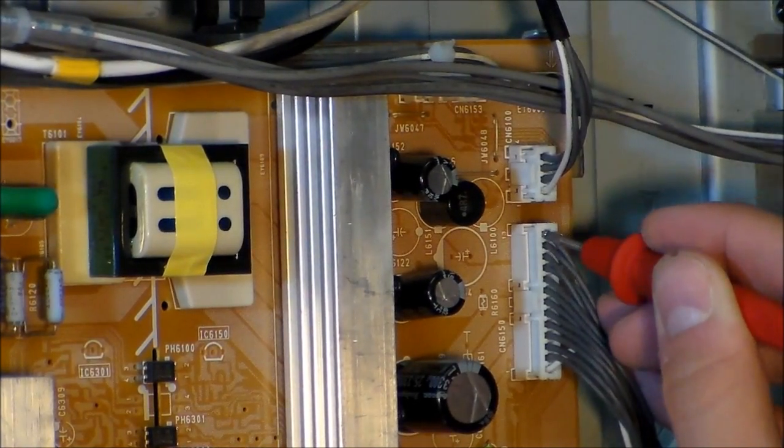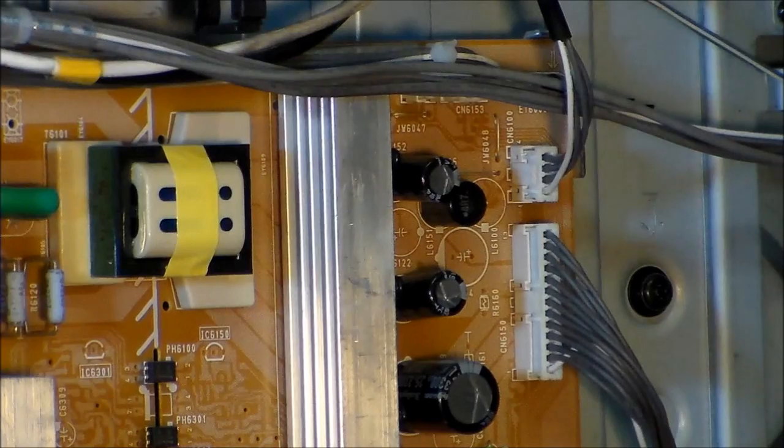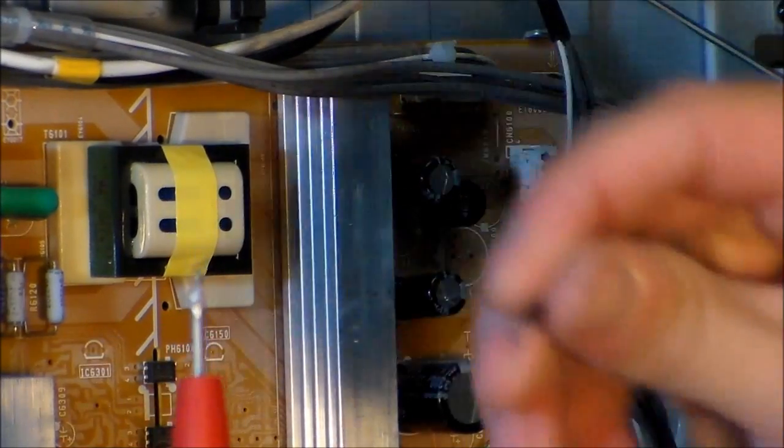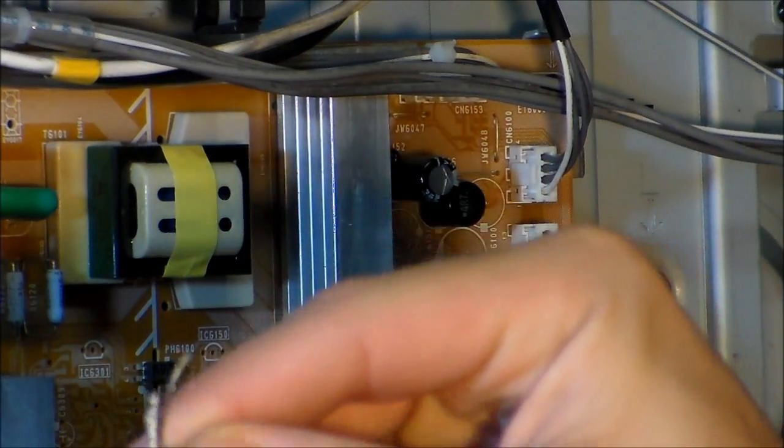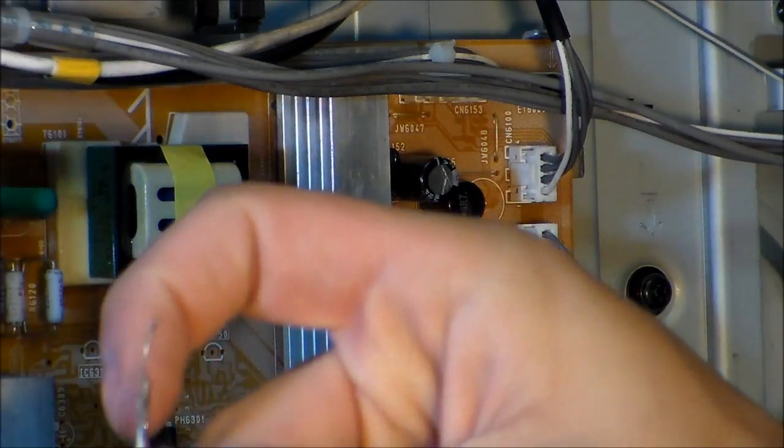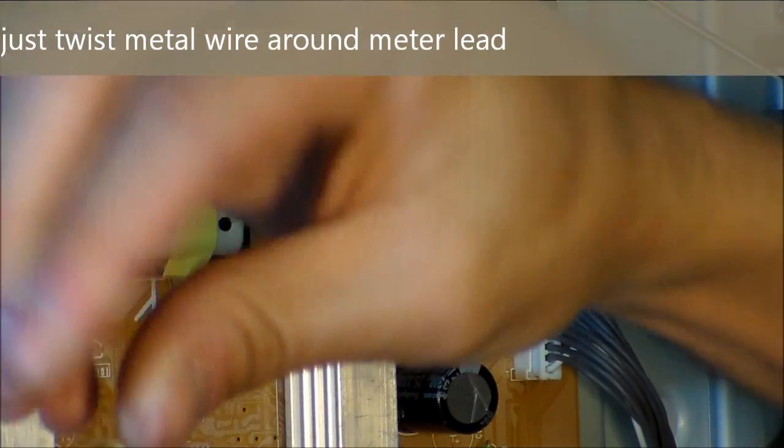What you have to do is get a part like a resistor or a diode, whatever works for you, and you want to take it like that and just twist it around a couple times.